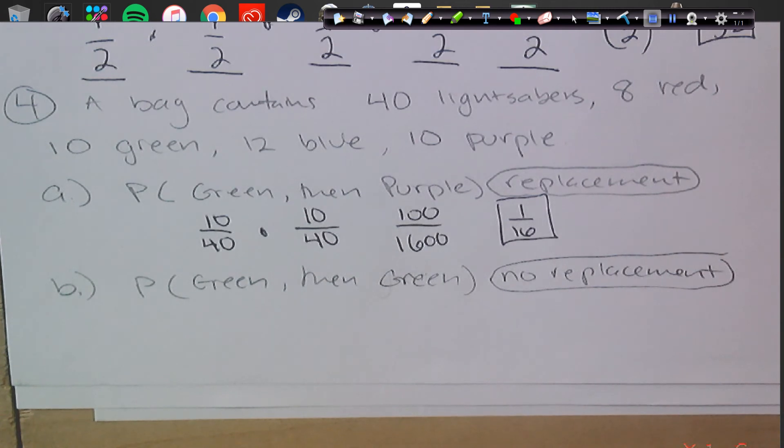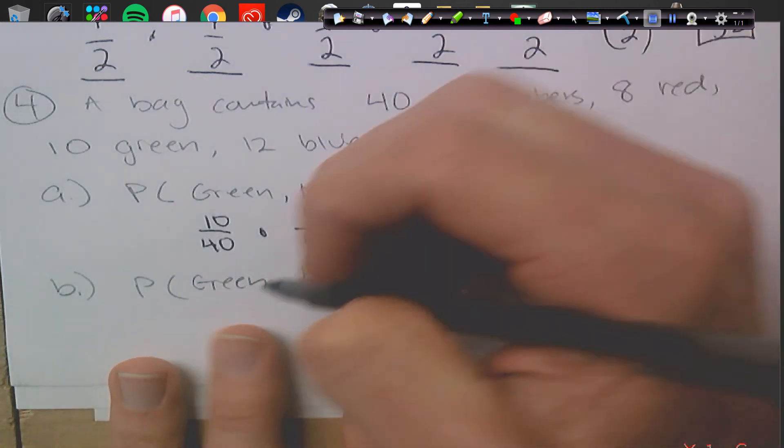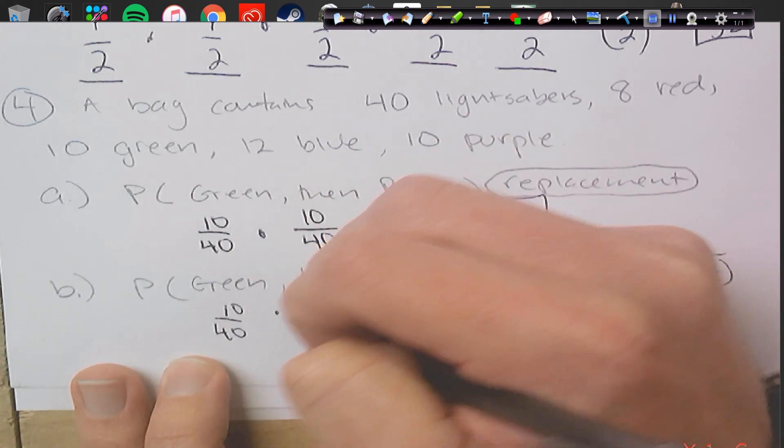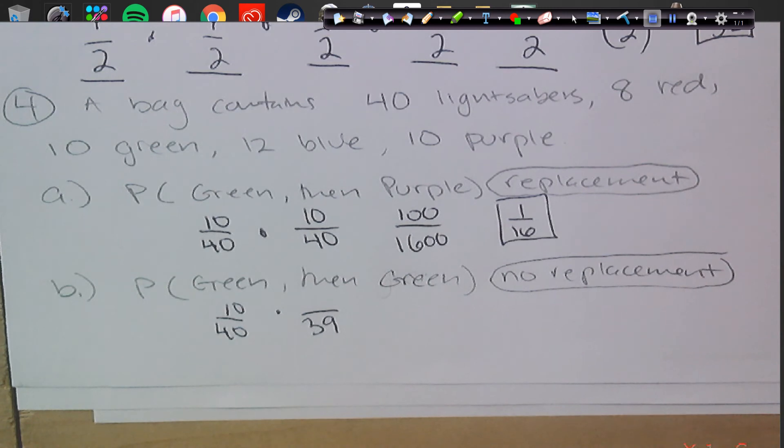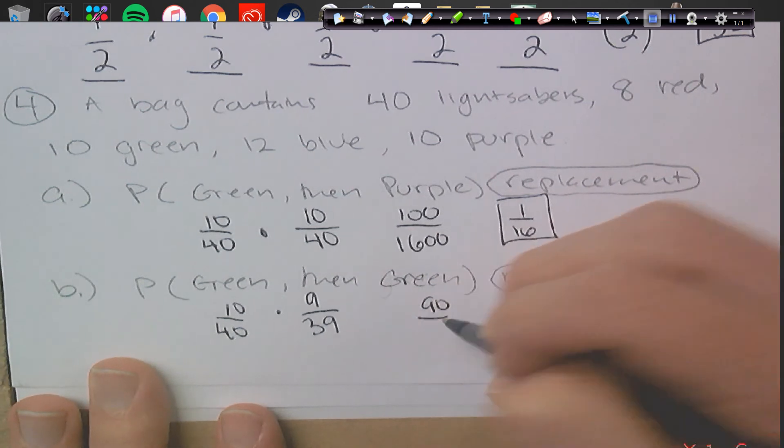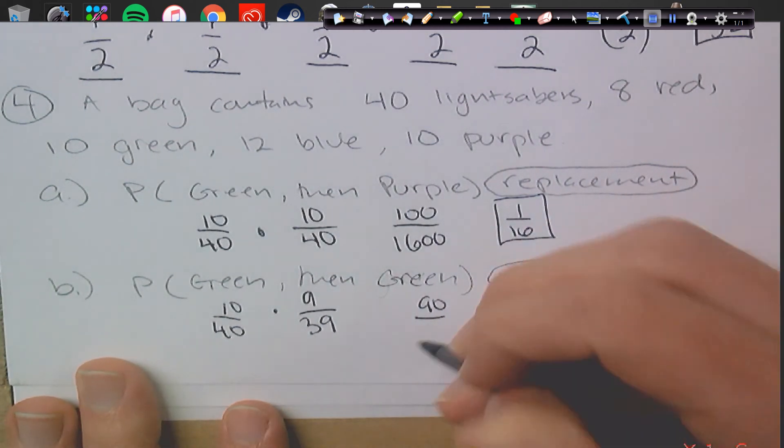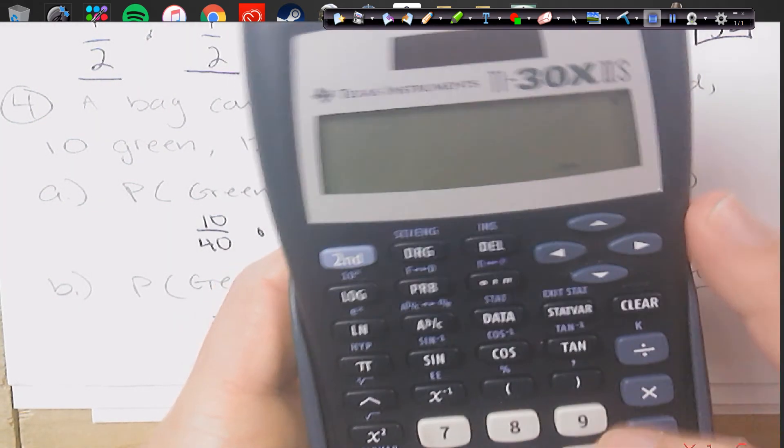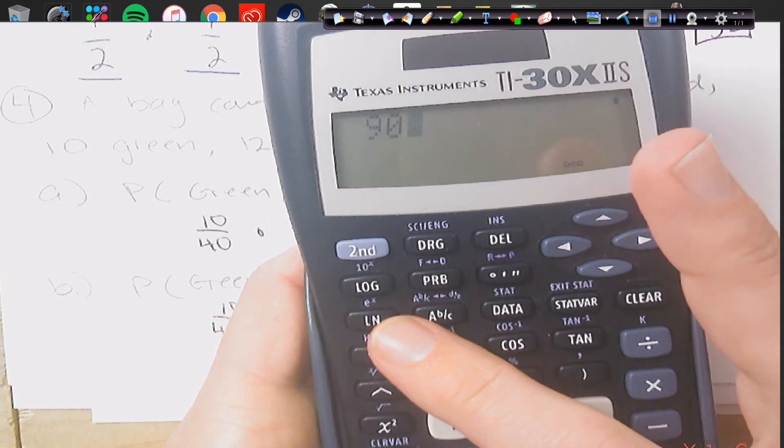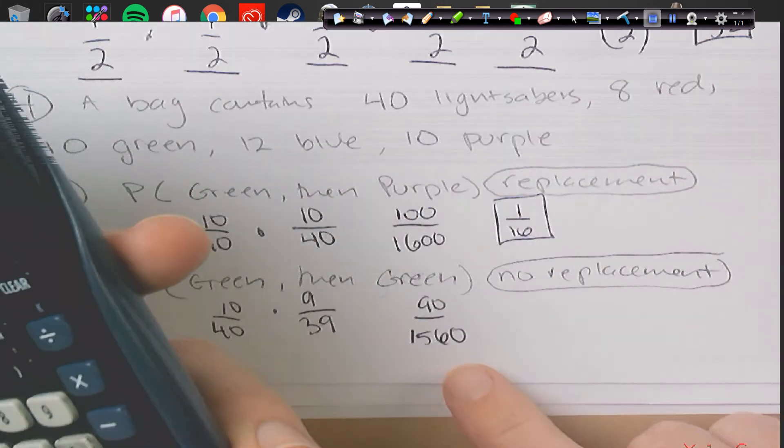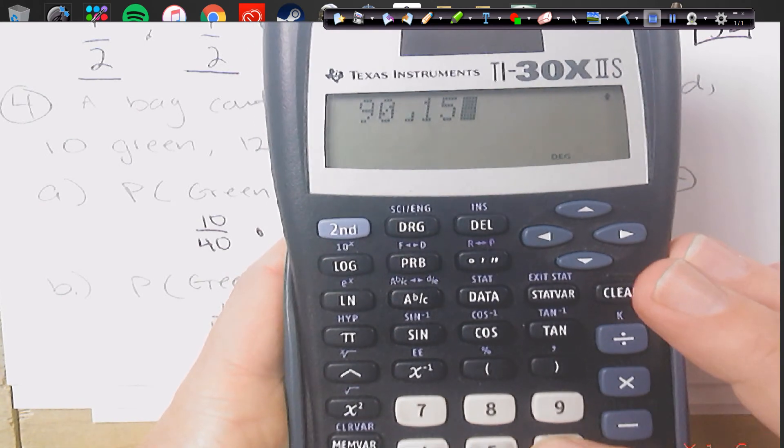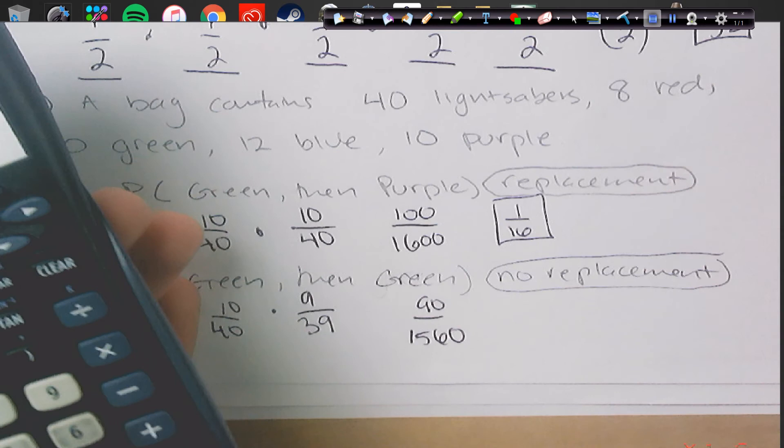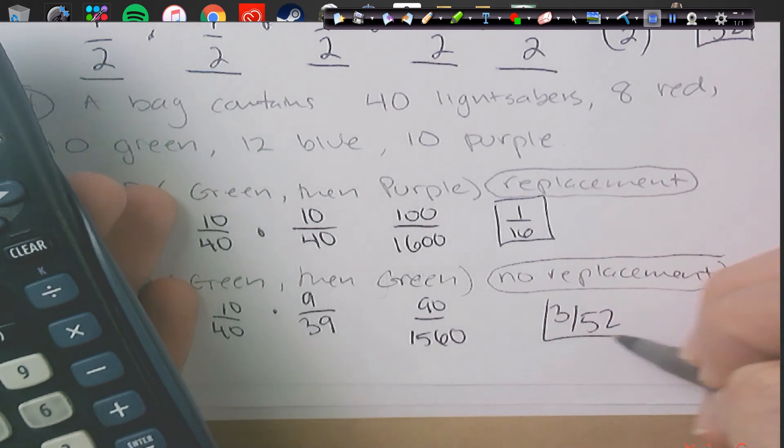Alright, what about not replacing? So if I don't put it back, well, the probability of the green actually stays the same. But now, I throw out a lightsaber. Now there's only 39 available. And I threw out the green one, because that's the first one I grabbed, so I only have 9 green left. So we're going to get 90 on the top, that one I can do in my head. And 40 times 39 is going to give us 1560. Let's go ahead and recall how to use our calculator to reduce. So we're going to get 90, we hit this AB-C button, and 1560, and we get 3 over 52 as our final answer.